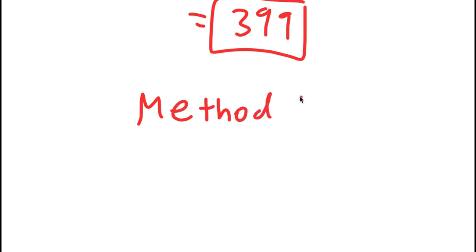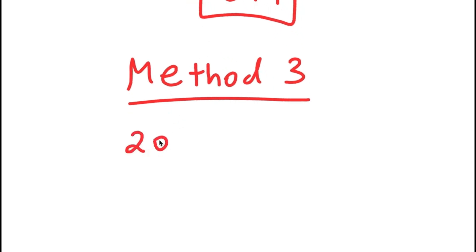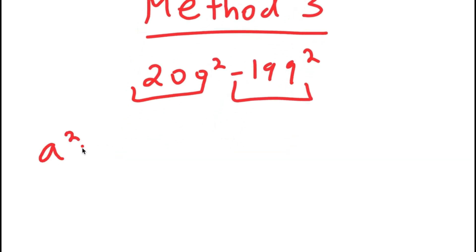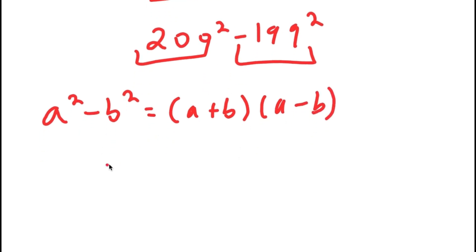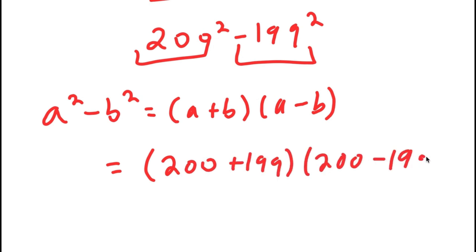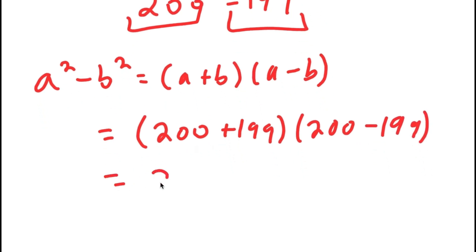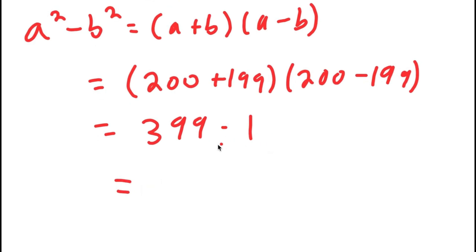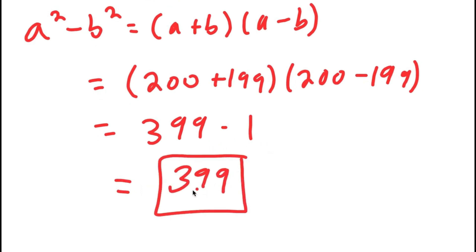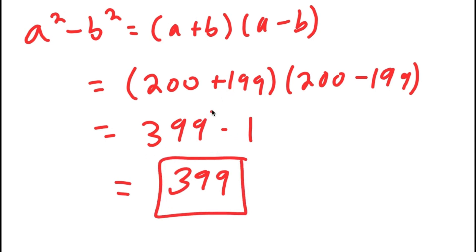For method number three, I have 200 squared minus 199 squared. Methods 1 and 2 involved rewriting one of the terms, but now I'm simply going to use the difference of squares property: a squared minus b squared equals a plus b times a minus b. So I get 200 plus 199 times 200 minus 199, which is 399 times 1, giving me 399.